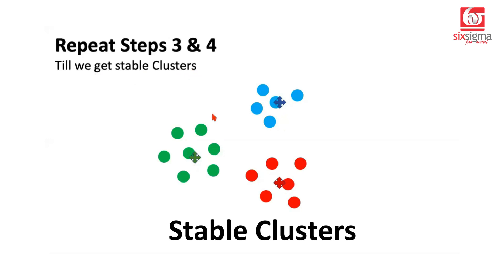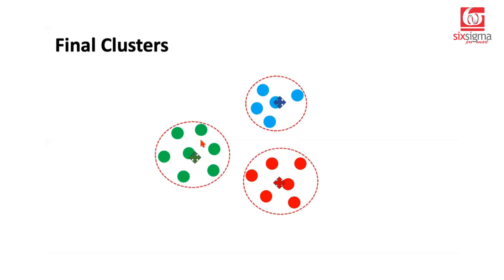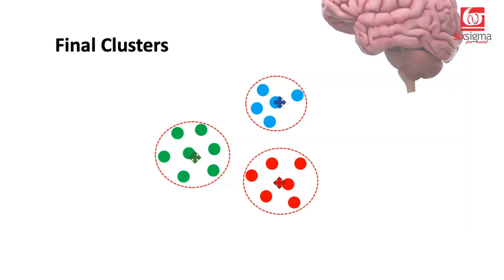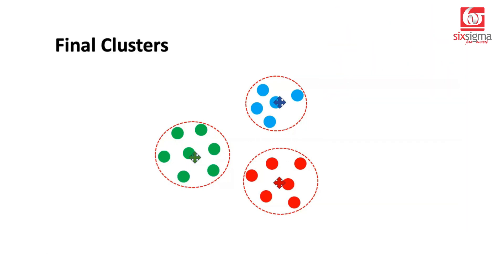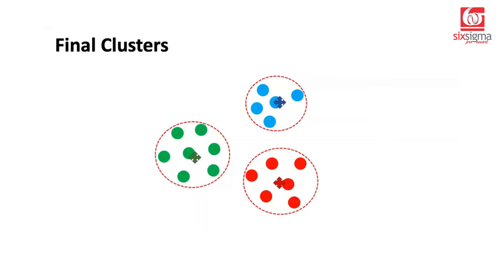What do we mean by stable clusters? We will not see any change any further — and I think we've reached that. So these become our final clusters. Just imagine you could look at the data and identify these three possible clusters. This is where we originally started, so then why did we have to follow this path? One, it's an element of human intelligence that we can just look at the data and find these clusters, whereas a machine had to take so many steps to arrive at this decision.